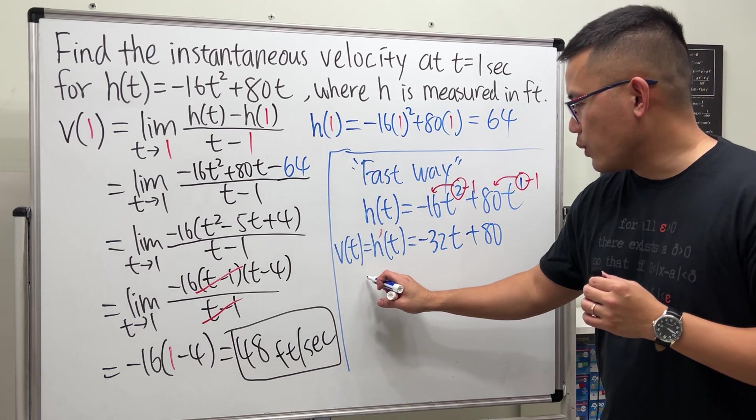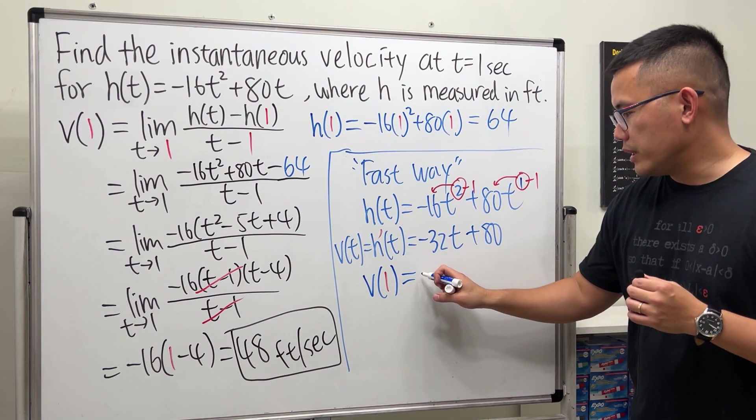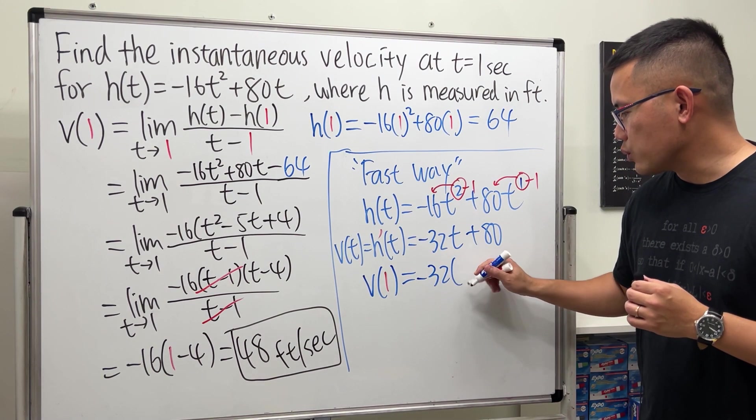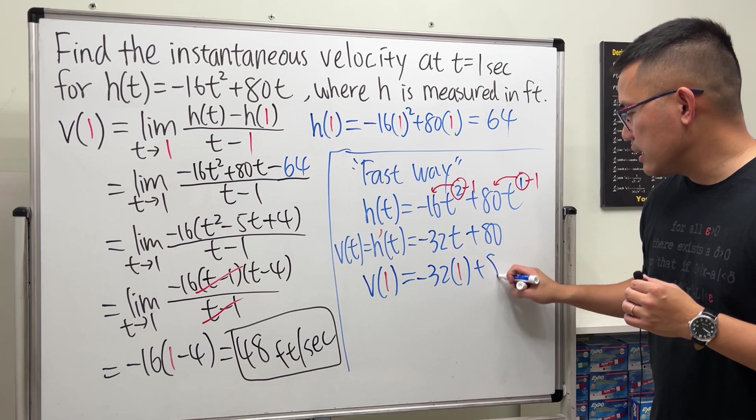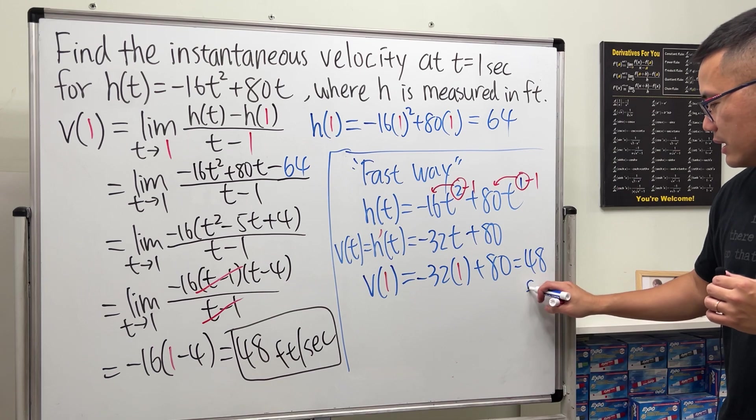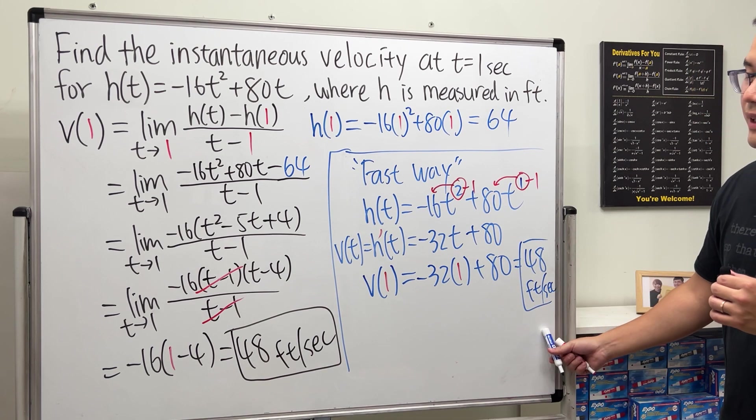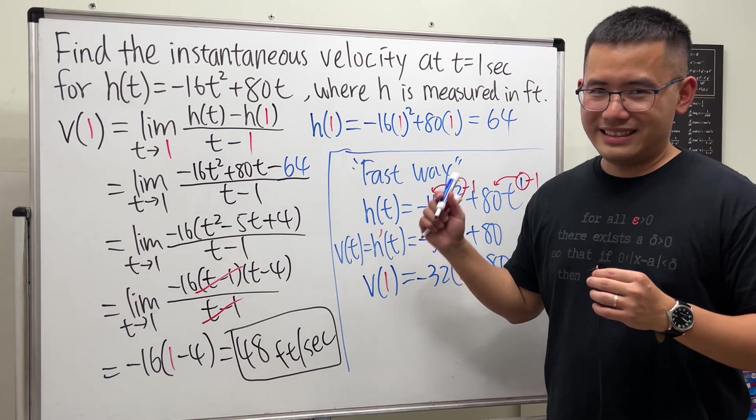And now if we want v of 1, we can just plug this into this t. We get negative 32 times 1, and then plus 80. And you bet we will get 48. Of course, this is feet per second. Of course, we are done. That's it.